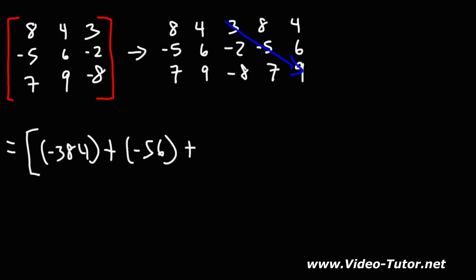3 times negative 5 is negative 15 times 9. 15 times 9 is 135, but with the negative sign, it's negative 135. And then 7 times 6 times 3: 7 times 6 is 42, 42 times 3. 4 times 3 is 12, 2 times 3 is 6, so it's 126.